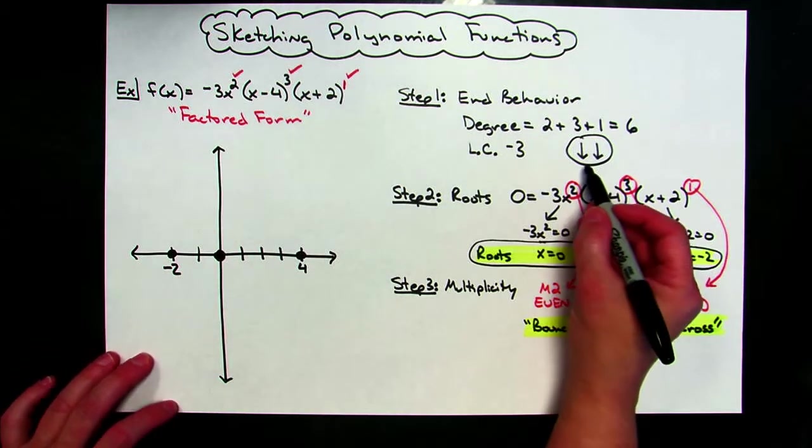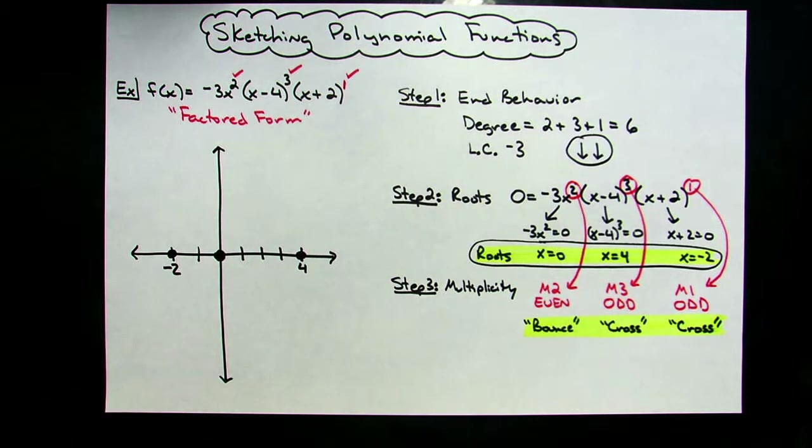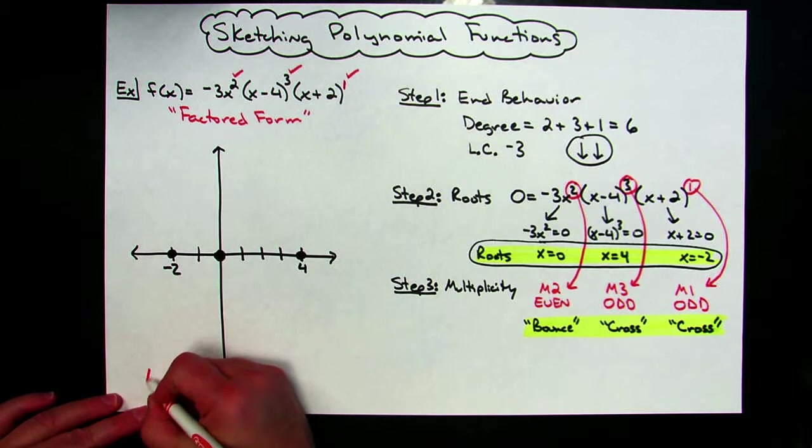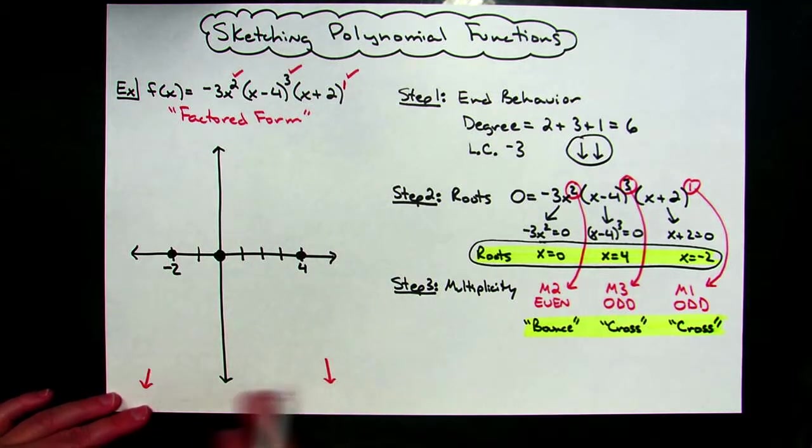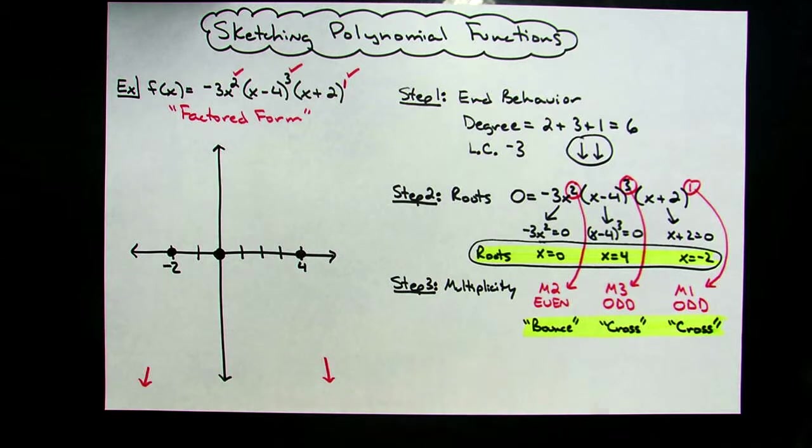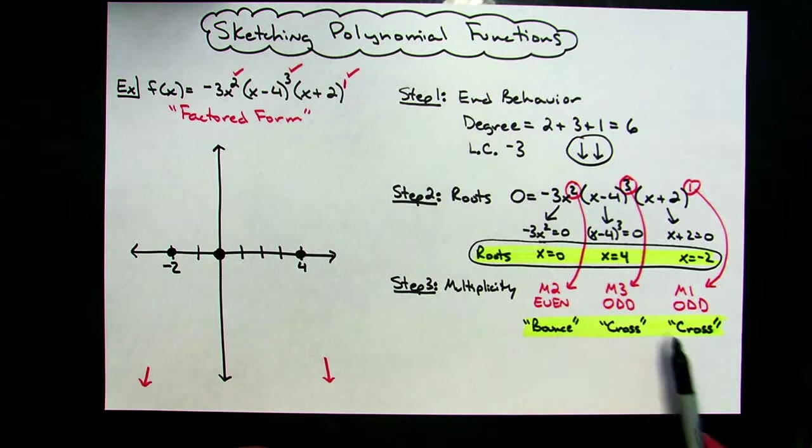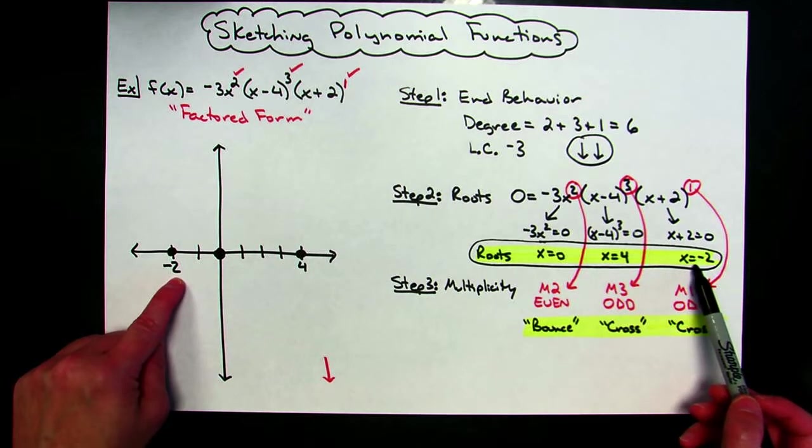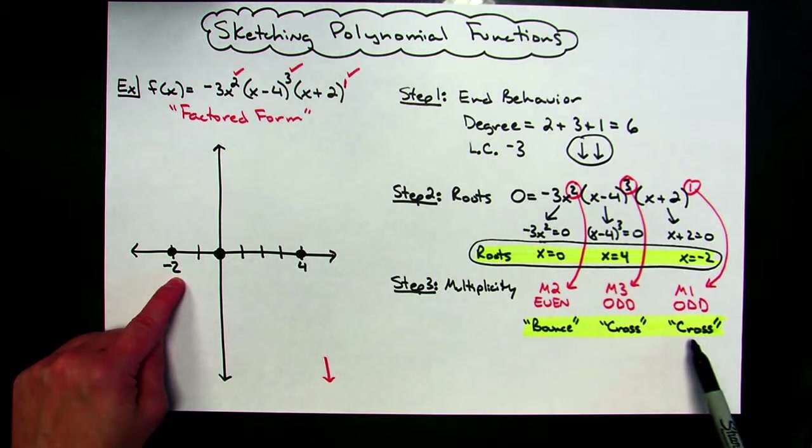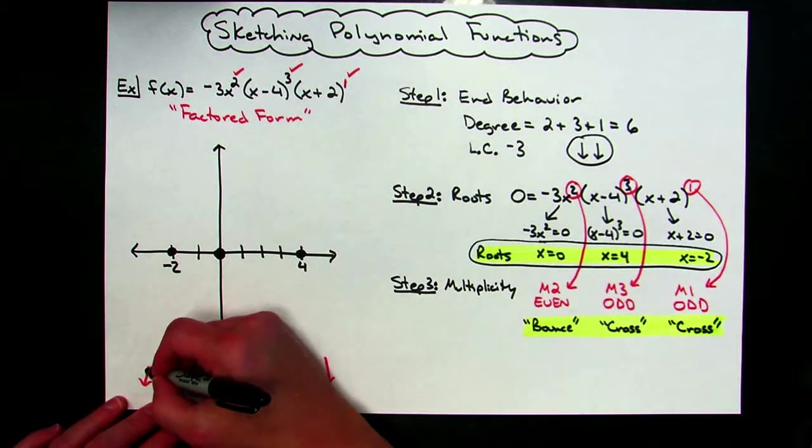All right, now, I also know that I have end behavior that is down, down. Okay, so I'm going to put that on my graph. I'm going to do it in red just so we kind of see it's standing out there. Okay, so there's my down, down. I know I have down, down. All right, now, the thing is you don't want to just go left to right across here, because that's going to screw you up. You really have to pay attention. Okay, my root at x equals negative two has to cross, okay, so I know I have to come from this direction. I'm going to come up here. I know I need to cross right there at negative two.